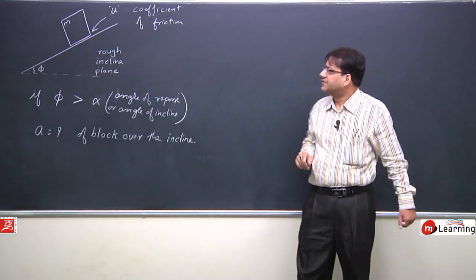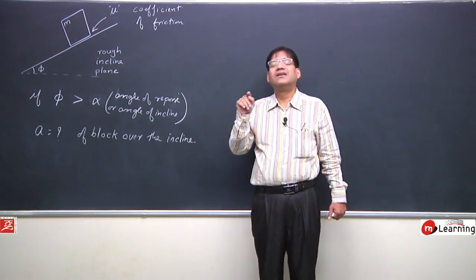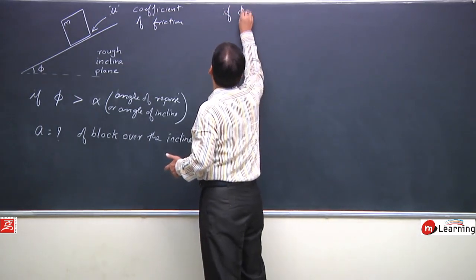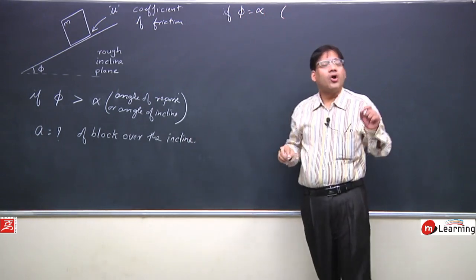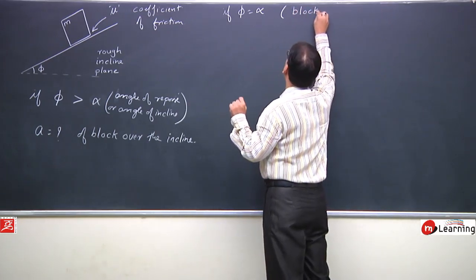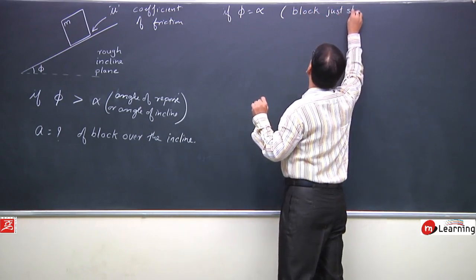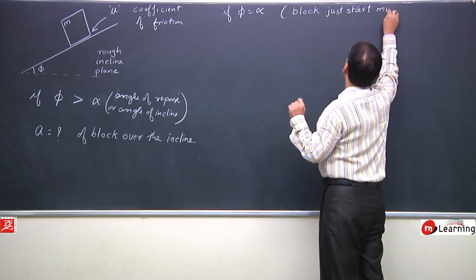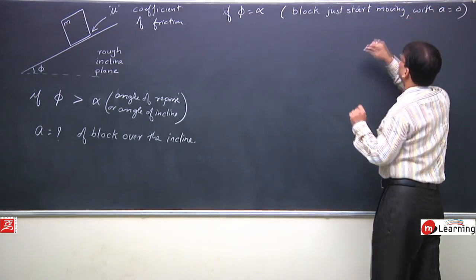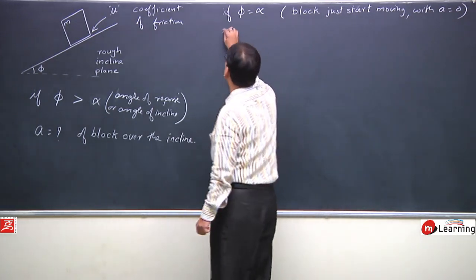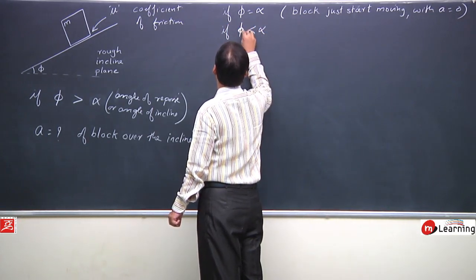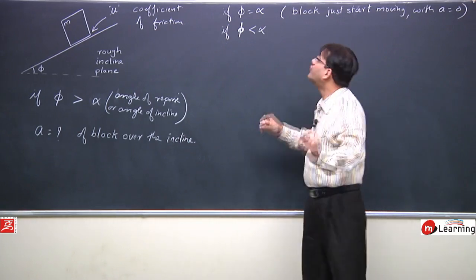This is the situation. First of all, if φ is just equal to α, the block would just start moving with zero acceleration — block just starts moving with acceleration zero. While if φ is less than α, this block would never move over the incline.